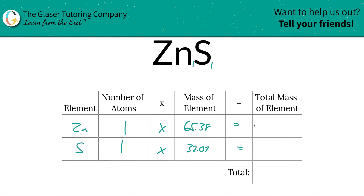Then we're going to find the total mass of the element in the compound by simply multiplying across. In this problem it's pretty simple because they're both ones, but you can use the same process in a problem that doesn't have a subscript of one and you won't be lost — just follow this exact process. The total mass of the entire compound is simply the summation of those individual element masses, which gives us 97.45.